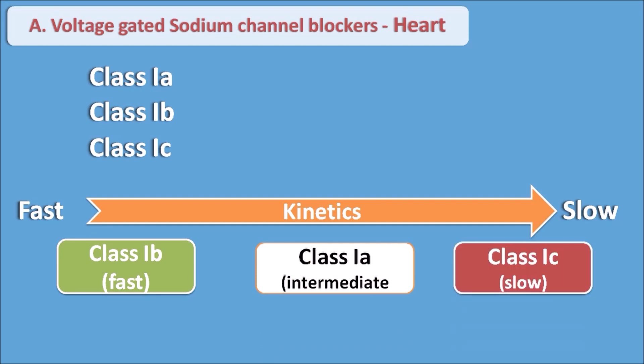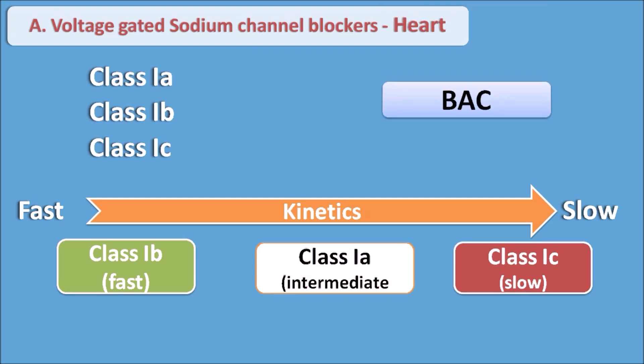You can remember the order as B, A, C: B has fast association/dissociation, A has intermediate, and C has slow kinetics. In this way, Class 1a, 1b, and 1c drugs differ only in the rate of association and dissociation with the ion channels.